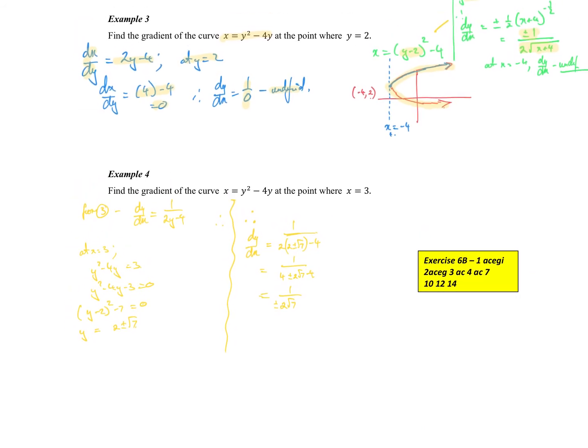Same question, except this time we've got the gradient at x equal to 3 specifically we're interested in. So again, I know dy/dx is 1 over 2y minus 4. At x equal to 3, what's the corresponding y values? So I need to solve at x equal to 3, y squared minus 4y equal to 3. And if I do that, I get y is equal to 2 plus or minus the square root of 7.